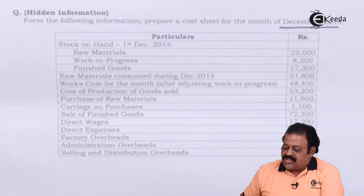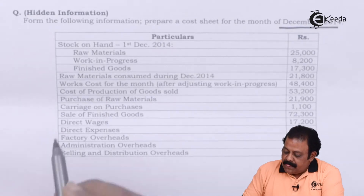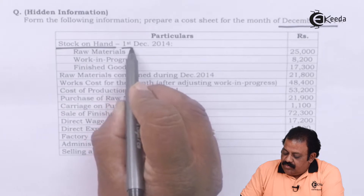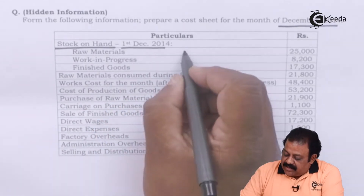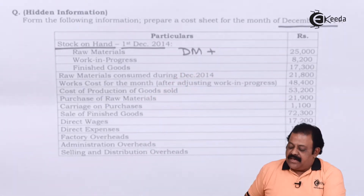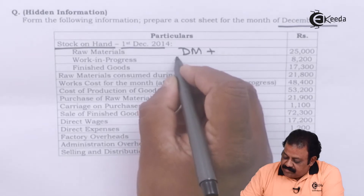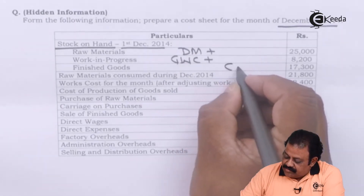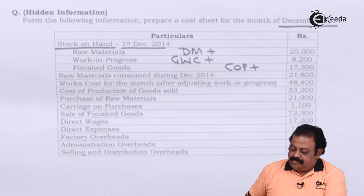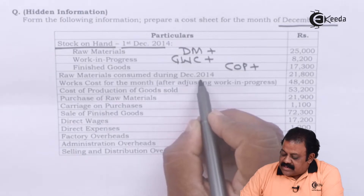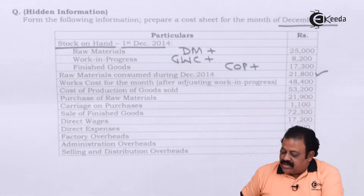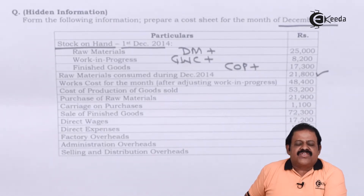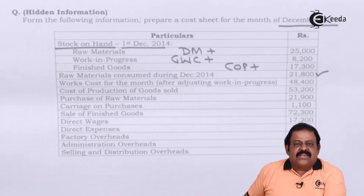From the following information, prepare a cost sheet for the month of December 2014. Stock on hand first December 2014: we have opening stock of raw material, which will be added to direct materials; work in progress, which will be added to gross works cost; finished goods, which is added to cost of production. Raw material consumed during the month of December 2014 — total amount is given as 21,800. Usually this information is not given in the question when opening stock and closing stock details are provided, so this information being given purposely means we are required to find out some missing information relating to direct materials.